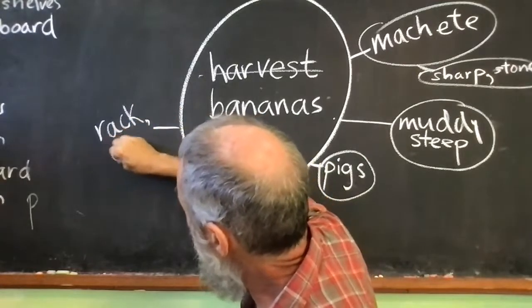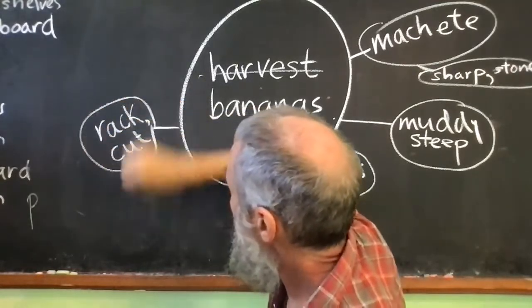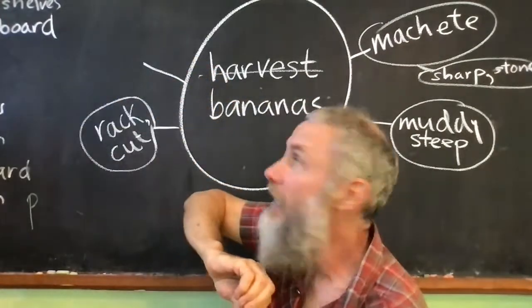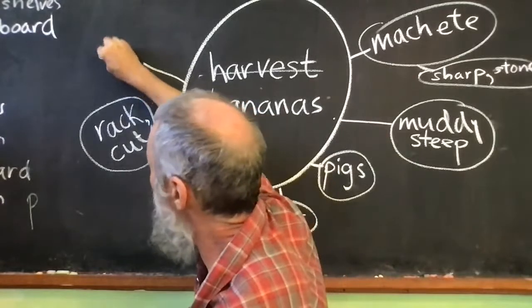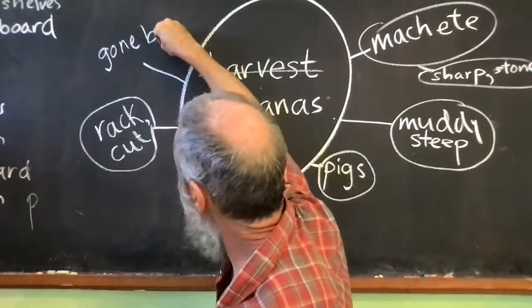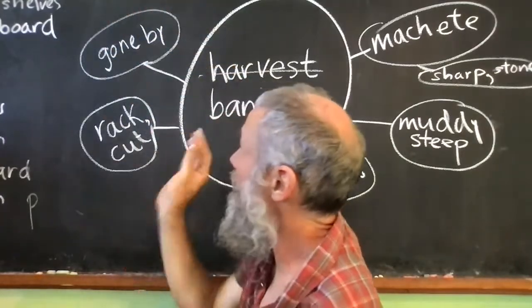And then I'm going to write cut because later I have to cut up that rack. And like I said, sometimes there's some I have to cut down that have already gone by. So I'll write gone by. That means the ones that have kind of rotted on the plant. I cut those down and they just fall down.